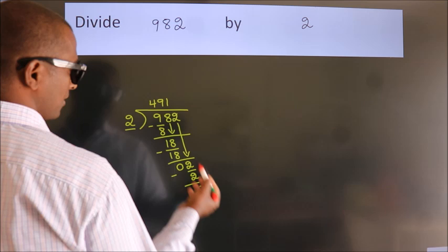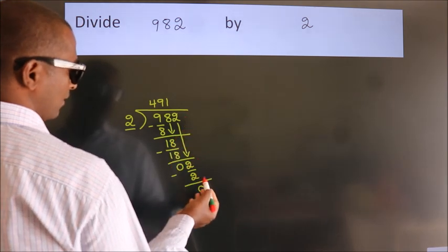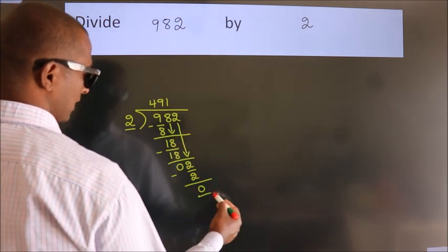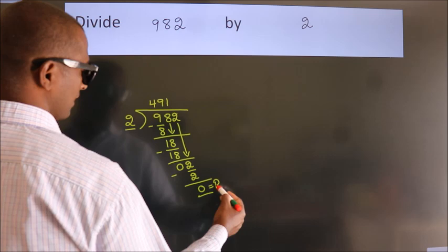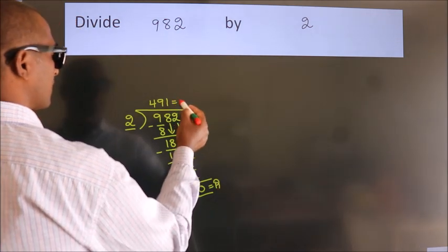After this, there are no more numbers to bring down, so we stop here. This is our remainder. This is our quotient.